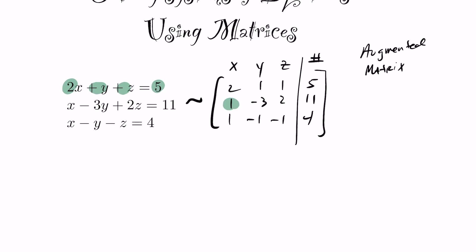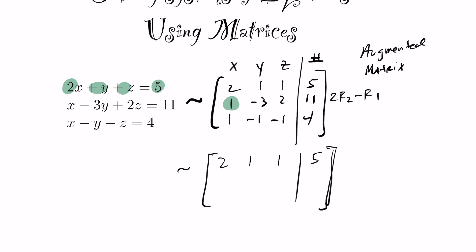Our first goal is to make the entry in row 2, column 1 equal to zero. To do that, I'll compute 2 times row 2 minus row 1. The first row stays unchanged. That operation gives zero — which is what we wanted. Continuing: 2 times -3 minus 1 gives -7; 2 times 2 minus 1 gives 3; and 2 times 11 minus 5 gives 17.